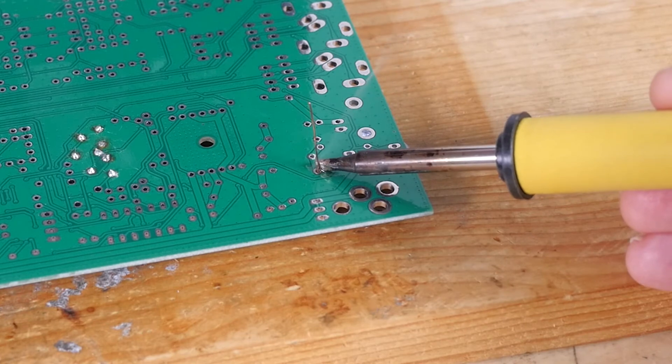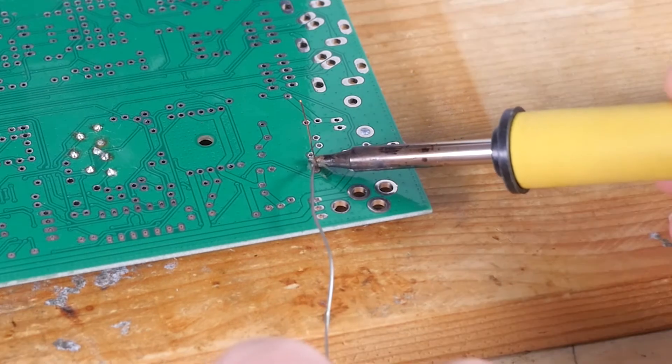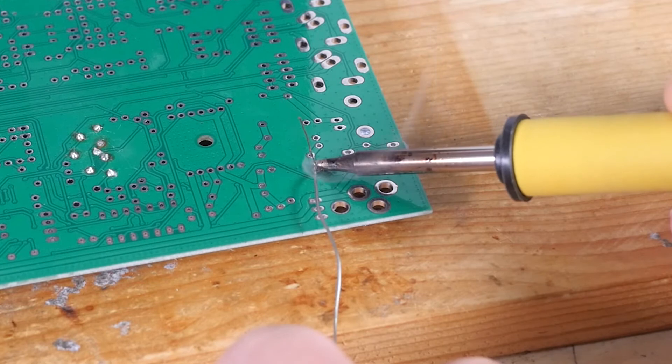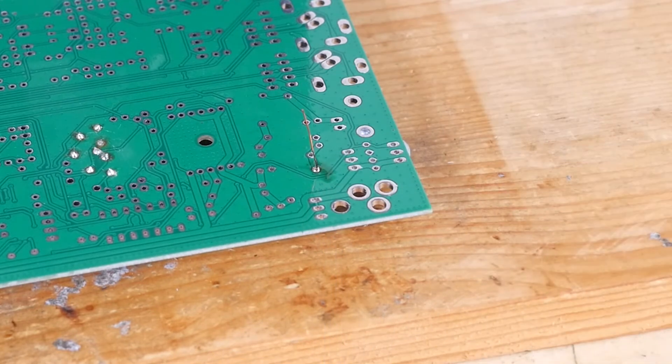This makes the continuity check essential, and if there's any doubt about contact, a bit more heat and flux should fix it. Now let's take a look at the other three coils.